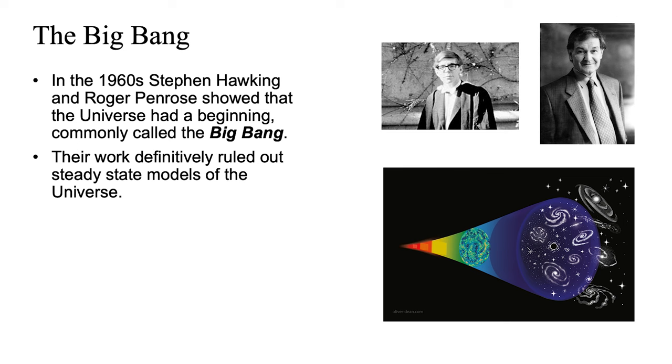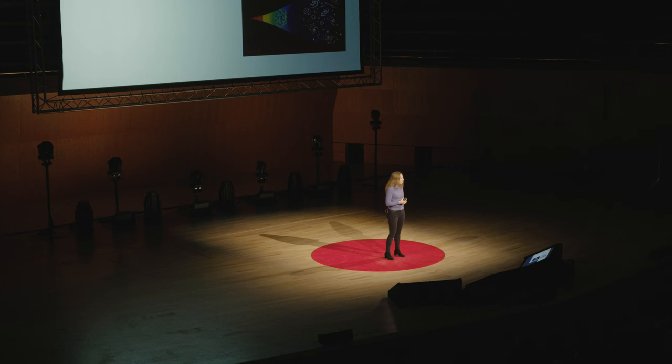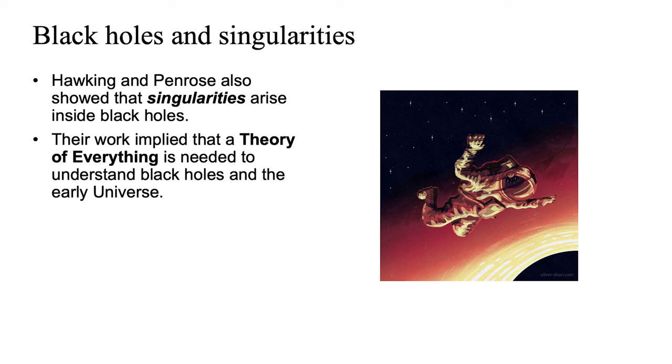In the 1960s, that takes us to Stephen Hawking. The picture shown there is from him in the 1960s when he was studying at Cambridge with his close collaborator, Sir Roger Penrose. What they found at that time is that the universe has a beginning. They showed definitively with their mathematical theories that the universe had a Big Bang. It's really appropriate for Stephen to be in The Big Bang Theory, when it was him who really cemented this theory. They definitively ruled out the idea that the universe could be in a steady state.